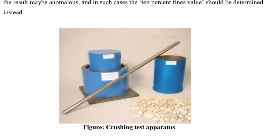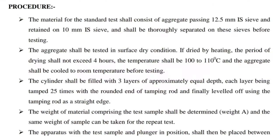This figure shows the crossing test apparatus. The material for the standard test shall consist of aggregate passing the 12.5 mm sieve and retained on the 10 mm sieve, and shall be thoroughly separated on these sieves before testing.